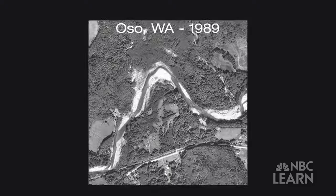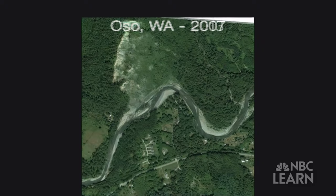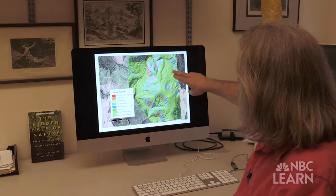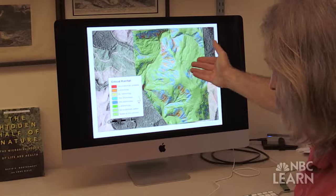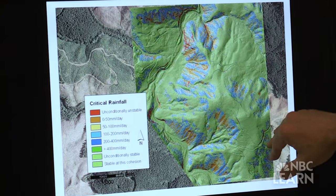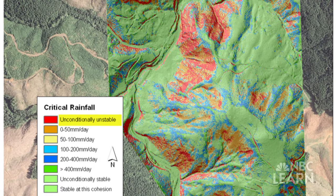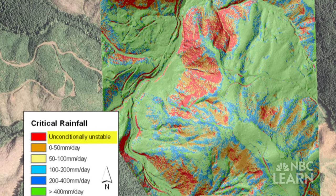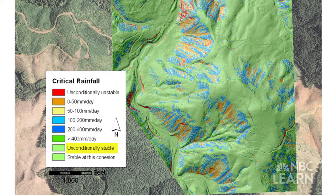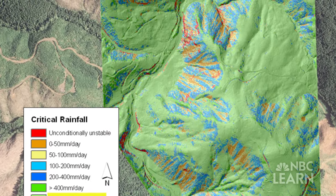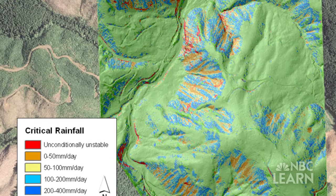Knowing an area's history is only one method for determining if landslides could happen again. Another method is to create a digital representation of the area and use computer modeling to see what could happen under different conditions such as heavy rainfall. You can map how wet different places will be, how steep they are, and put that information into a slope stability model to predict where it would take a little rainfall or a Noah's flood to trigger a landslide — giving you an idea of higher and lower risk areas on a piece of topography.